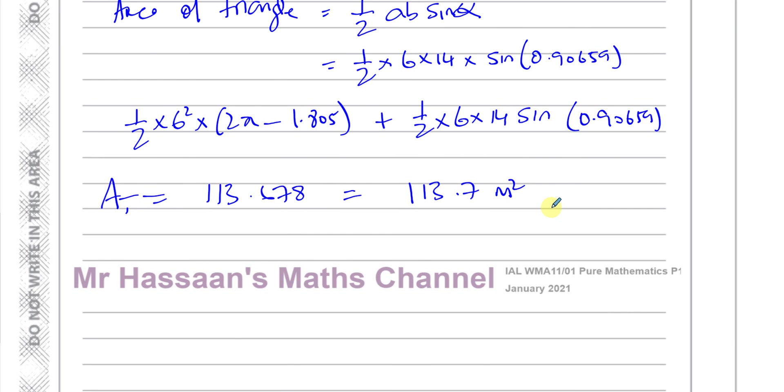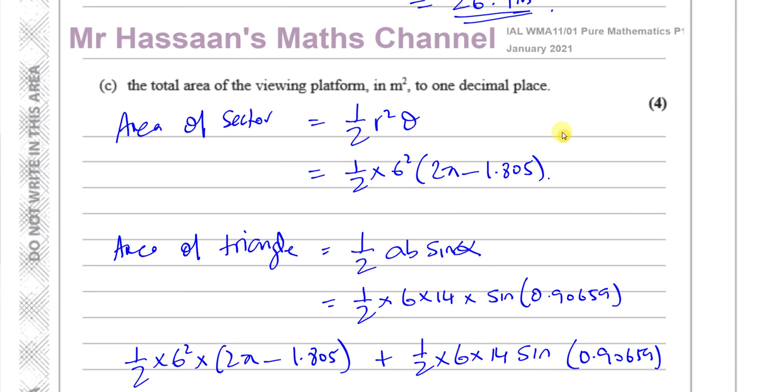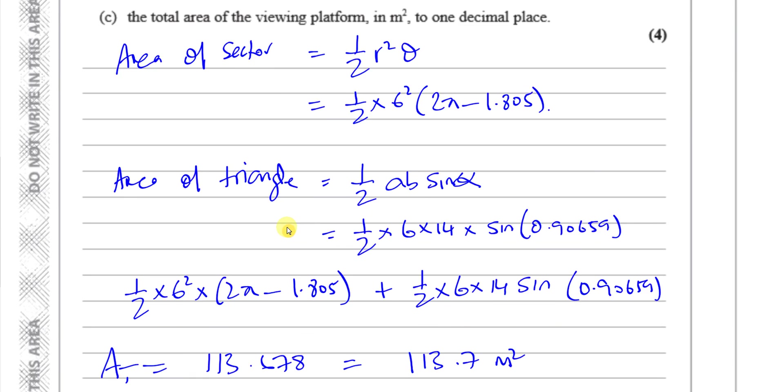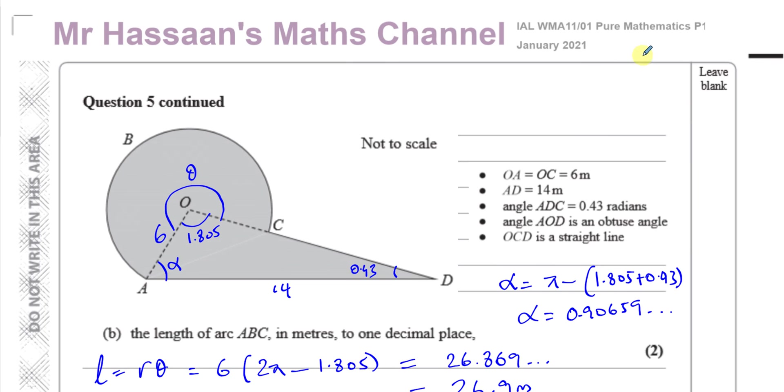Meters squared to one decimal place and there we have the answer for this question part C. And I think that was the whole question, yeah that's the whole question number five done. So here we have question five from P1 January 2021. Other questions from this paper you'll find in this playlist which should appear in this section here. Other questions from this topic of radian measure from P1 you can find in this playlist. You can subscribe to my channel by clicking on this icon. Thank you for watching.